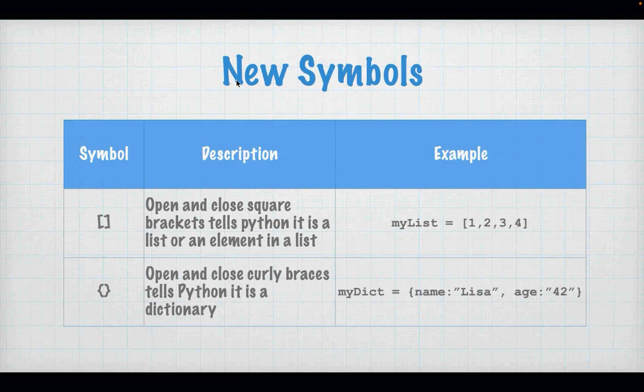So we have some new symbols this week. We have the open and close square brackets and we have the open and close curly brackets. Square brackets are used for a list; curly brackets are used for a dictionary. If you're a square bracket, you're going to have an ordered list with an index. If you are curly brackets, you're going to have an unordered list with key-value pairs.